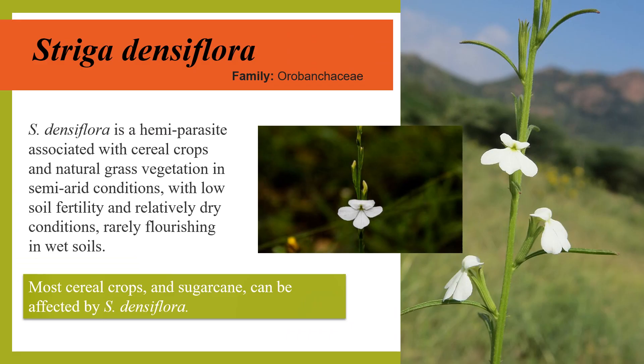Striga densiflora is a hemiparasite associated with cereal crops and natural grass vegetation in semi-arid conditions with low soil fertility and relatively dry conditions, rarely flourishing in wet soil.